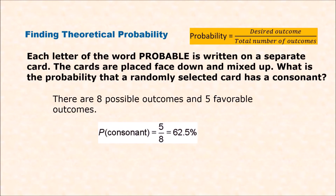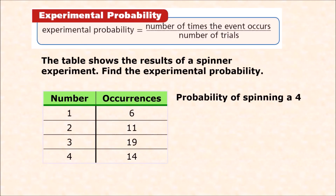Out of the eight letters in the word PROBABLE, five are consonants. So we write: probability of a consonant = 5 out of 8, or 0.625, or 62.5%. We did not need to actually select a card — we already knew the answer. That's why we call it theoretical probability.